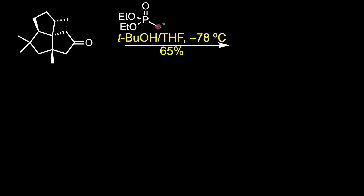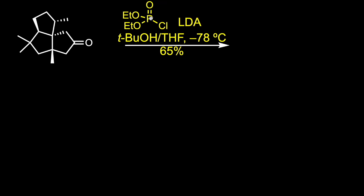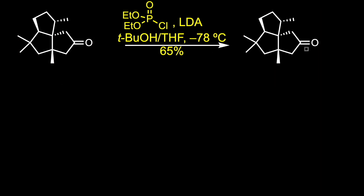Enolization of the ketone under thermodynamic conditions was accomplished with LDA and 0.1 equivalents of tert-butyl alcohol in THF. Quenching of the dienolate with diethylchlorophosphonate resulted in the depicted product.